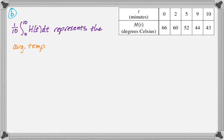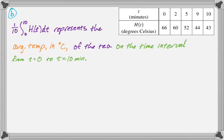On the time interval from t equals 0 to t equals 10 minutes. So you just want to use the units when you're putting things in context. And then that's the entire thing. So average temperature in degrees Celsius of H(t) on the time interval from t equals 0 to t equals 10 minutes. Now we have to approximate it using a trapezoidal sum with four sub-intervals.